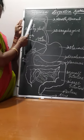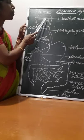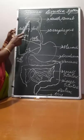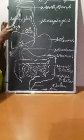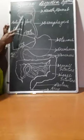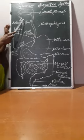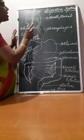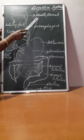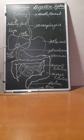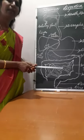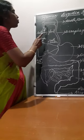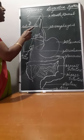Let us start with the first part: the mouth. The mouth is a slit-like opening which opens into the oral cavity, or what we call the buccal cavity. In the mouth, there are three pairs of salivary glands. These glands secrete the salivary amylase enzyme, which helps in digestion. Tongue and teeth also help in digestion. The tongue helps in mixing the food with saliva, moistening the food, and helping in swallowing.